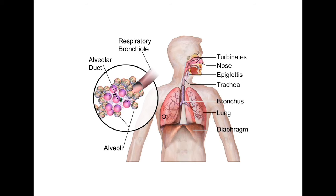The air then passes through and goes into the trachea. There's a little flap that covers the opening of the trachea, called the epiglottis, and it prevents food and drink from entering the trachea.